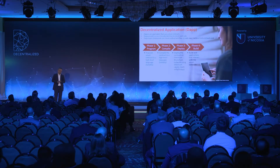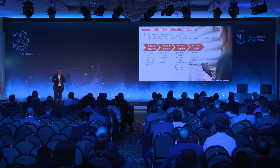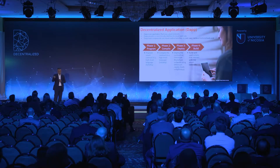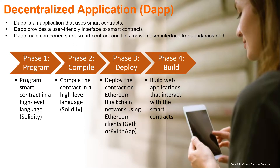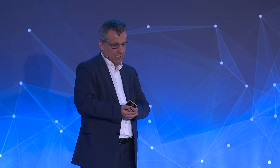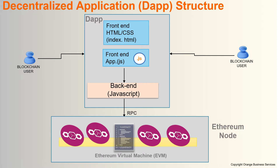For the smart contract using Ethereum, the smart contract is part of the decentralized application. We have four phases: program, compilation, deploy, and build. We write the program, compile using Solidity in the case of Ethereum, deploy using the traditional way through blockchain nodes, and finally build the web interface — frontend and backend — so customers can understand how the smart contract works. The architecture includes two blockchain users, a frontend and backend, remote procedure call, and an Ethereum node where the smart contract and the chain reside.